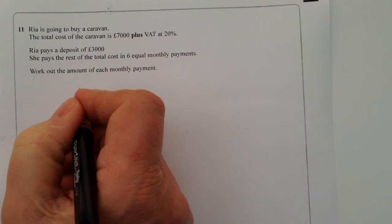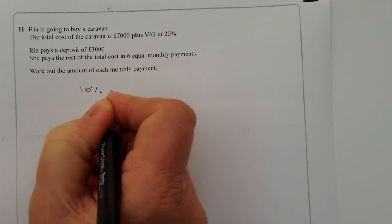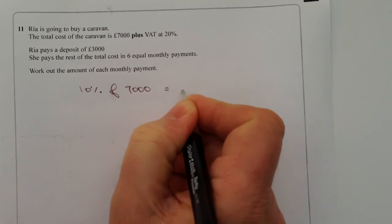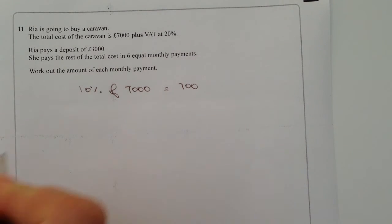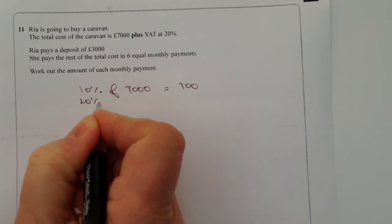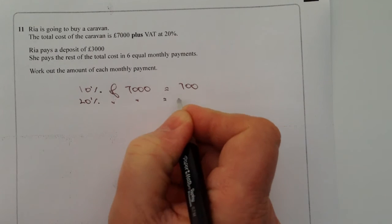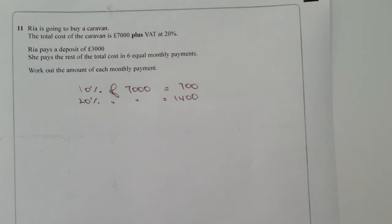Well, we know that 10% of 7,000 is 700, and therefore if we double that, 20% of 7,000 equals £1,400. So that's the value of the tax, the value added tax at 20%.